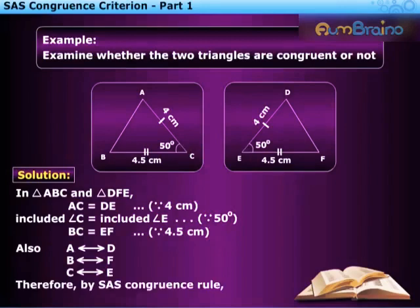Therefore, by SAS congruence rule, we can say that triangle ABC is congruent to triangle DFE.